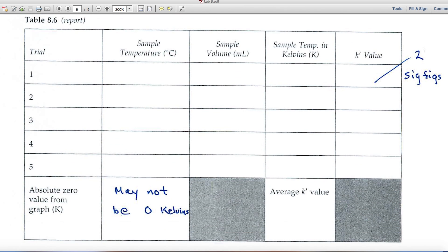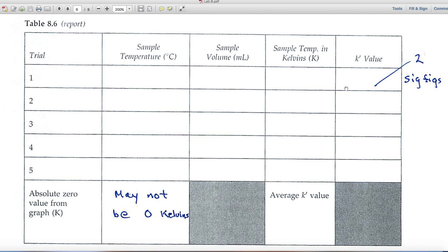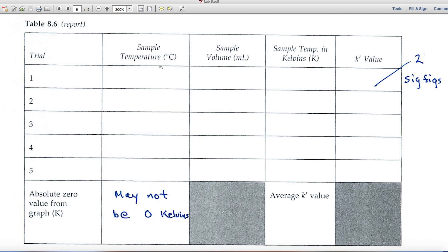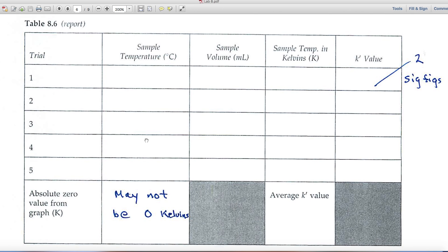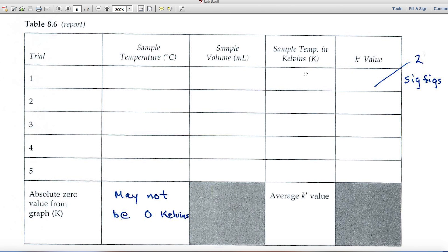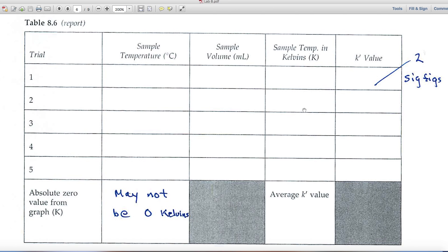Then in the report part of this, here's where you'll enter the temperatures, the volumes, then the sample temperature in kelvins. And finally, the K prime value, the constant value that you calculate. Want to make sure that it's to two significant figures.